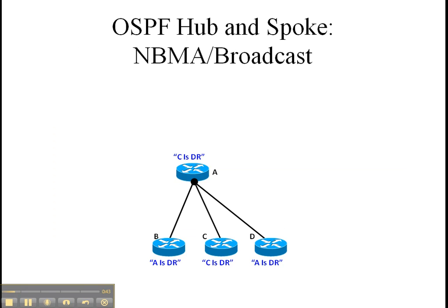So in this picture, there are four routers, but you don't know which is going to be the DR. Let's say you leave it with the default settings. B and D declared that A is the DR, but if you look at A, A is saying it's not the DR — C is the DR. So there's a problem here.